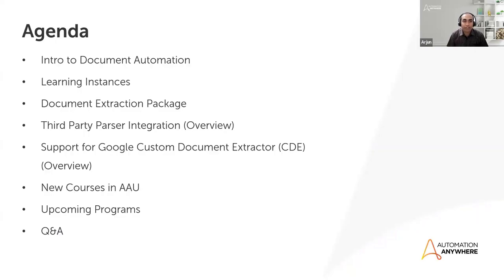First let's introduce document automation. We'll learn about learning instances — how to create them, how to create different kinds of rules, and how to query them. We also have a document extraction package, and we'll see how to use that and how to modify any kind of data coming back from documents. We'll also take a quick look at how you can use your own parsers, and there's support available for Google's Custom Document Extractor, which is called CDE.